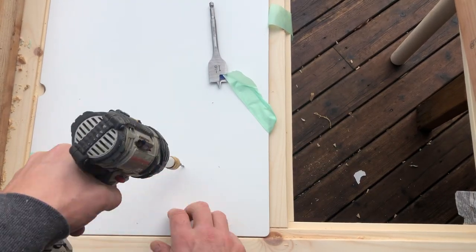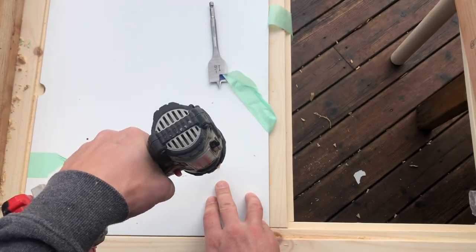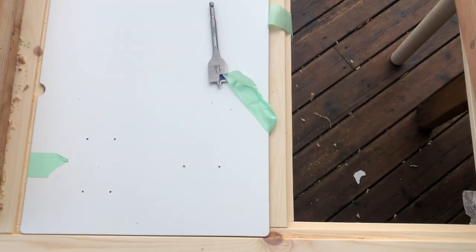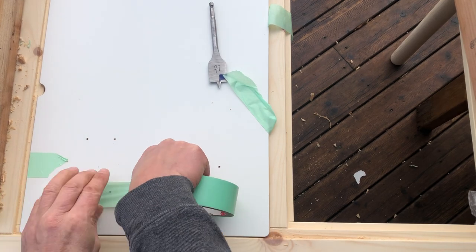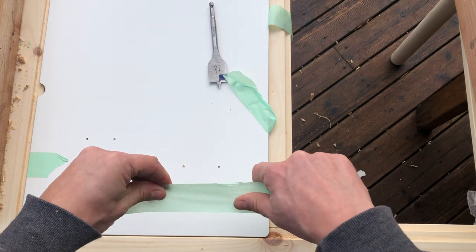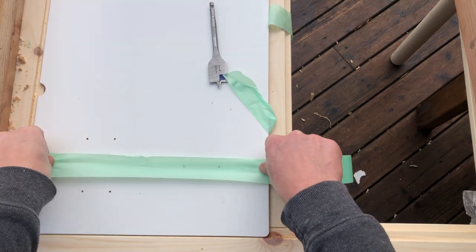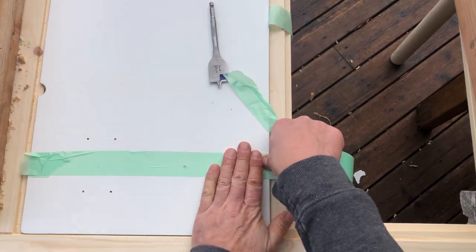I've got my four holes and my two marks here. I'm going to mark them a little bit more. I want to put some masking tape again to prevent the wood from splintering. Actually, I don't need it. I need it only for the big holes.